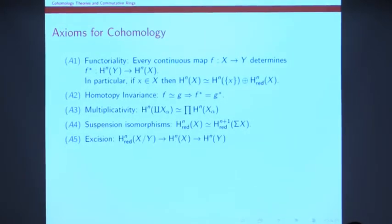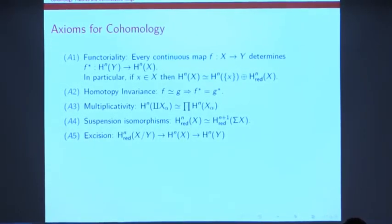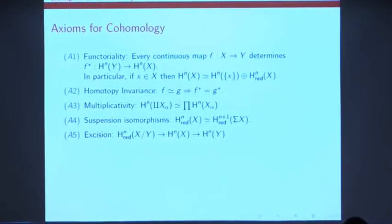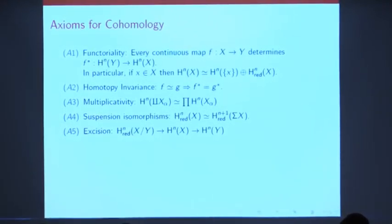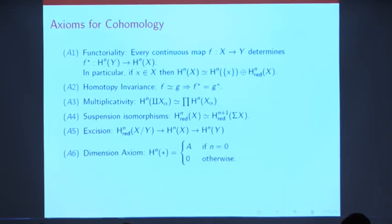There's some version of excision, which is where you get long exact sequences. If X is a complex containing a subcomplex Y, then any class in the cohomology of X which vanishes on Y comes from a cohomology class on X mod Y. So that sequence there is exact. And the one that I really want to call attention to is the so-called dimension axiom. It's a normalization condition which tells you what the cohomology of a point looks like. The cohomology of a point is supposed to be concentrated in degree 0, and in degree 0 what you see is the abelian group A.